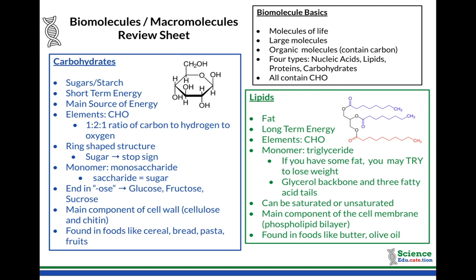Fats can be saturated, unsaturated, or trans fats. Trans fats are the bad ones that are not naturally occurring. Saturated and unsaturated refers to the number of hydrogens: if it is saturated, it has as many hydrogens as possible. If it is unsaturated, somewhere there is a carbon-to-carbon double bond and it is missing some potential hydrogens, which also changes shape and structure. Lipids are the main component of the cell membrane — the phospholipid bilayer. Found in foods like butter, olive oil, and coconut oil. Saturated fats are solid at room temperature; unsaturated fats are liquid at room temperature, like olive oil and avocado oil.